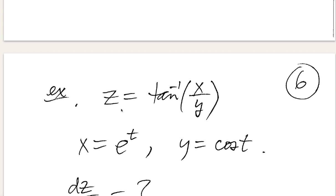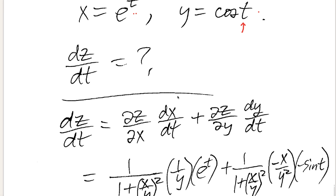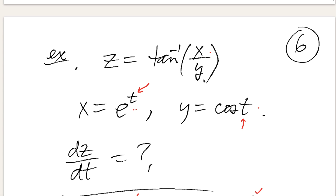Let's go back to our original type of question. Suppose z equals arctan(x/y), and x equals e^t and y equals cosine t. I can talk about dz over dt — using regular d's, not partial derivative symbols — because there's only a single independent variable t, so z is ultimately a function of t. Using the chain rule: dz over dt equals the partial derivative of z with respect to x times dx over dt, plus the partial derivative of z with respect to y times dy over dt.